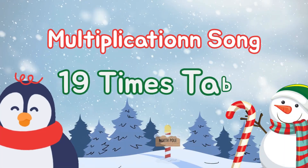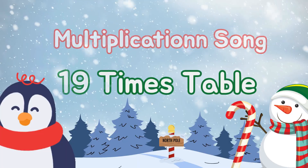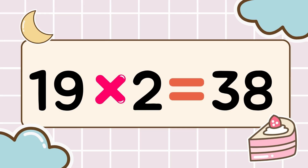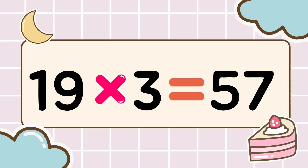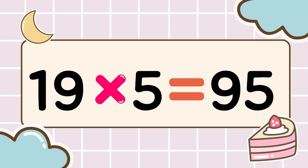Math time! Let's multiply! Let's have fun while we memorize. 3, 2, 1, go! 19 times 1 is 19, 19 times 2 is 38, 19 times 3 is 57, 19 times 4 is 76, 19 times 5 is 95. Awesome!